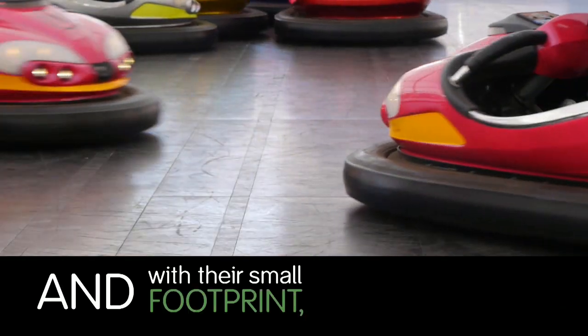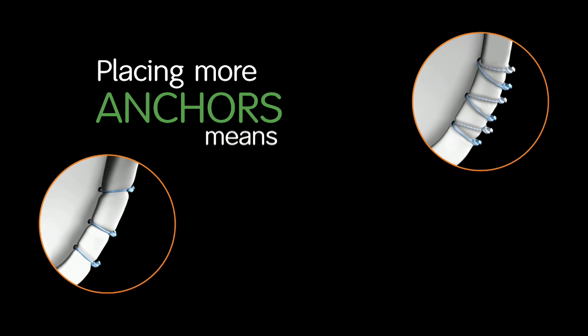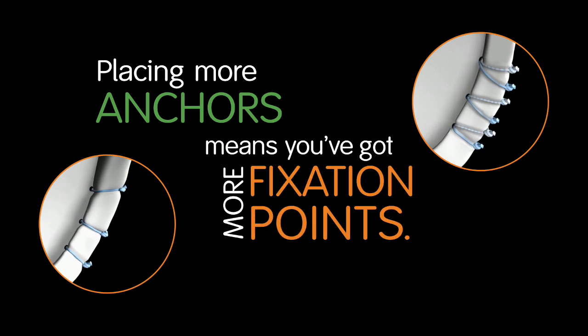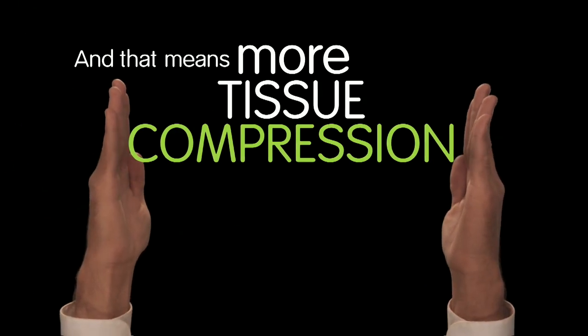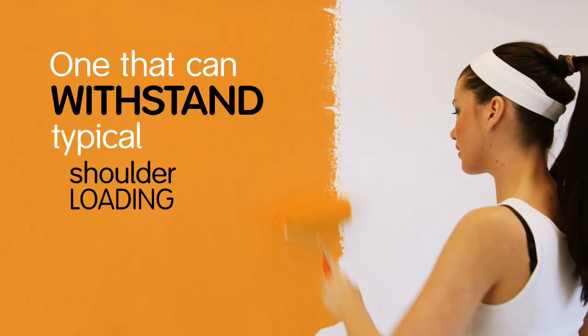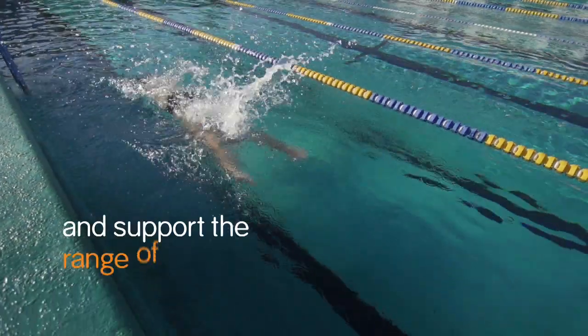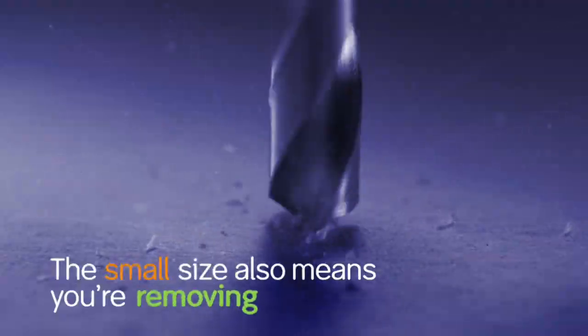And with their small footprint, they won't bump into each other. Placing more anchors means you've got more fixation points. And that means more tissue compression for a secure repair. One that can withstand typical shoulder loading forces and support the range of motion necessary for healing. The small size also means you're removing less bone.